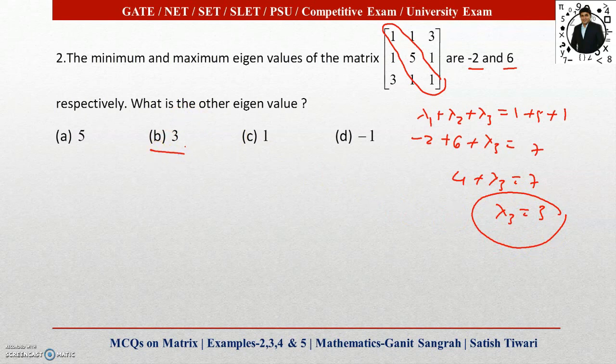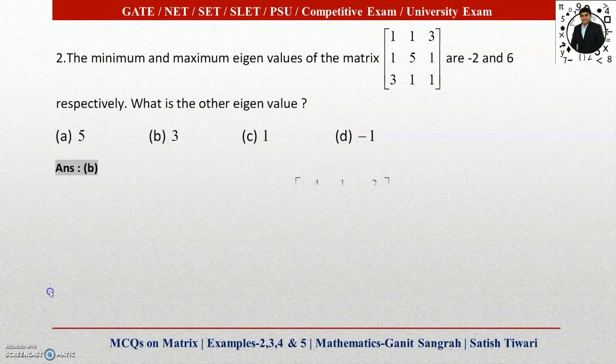You can apply this property, or we have one more property through which we can find the third eigenvalue: λ₁ × λ₂ × λ₃, the product of eigenvalues, equals the determinant of A. So option B is the correct option.